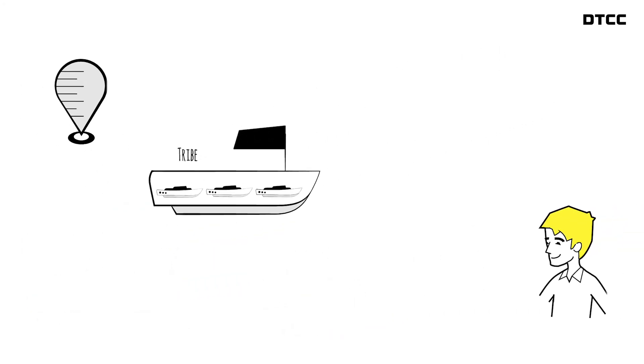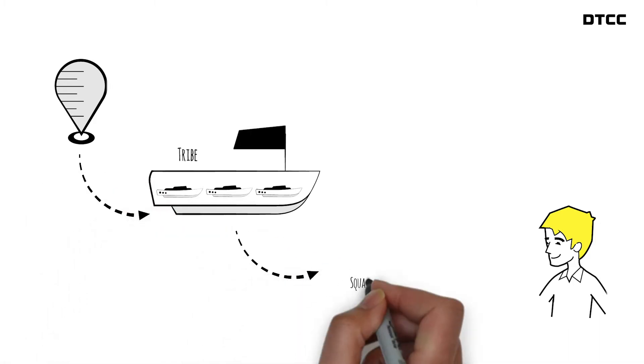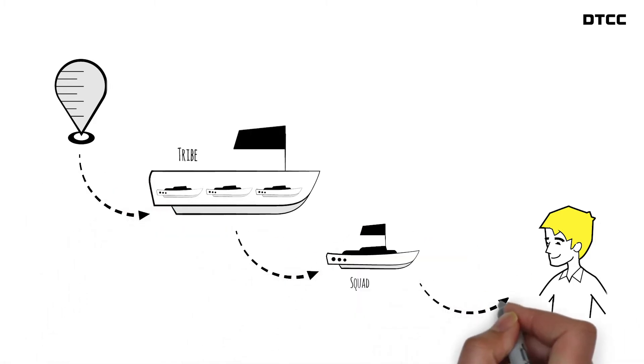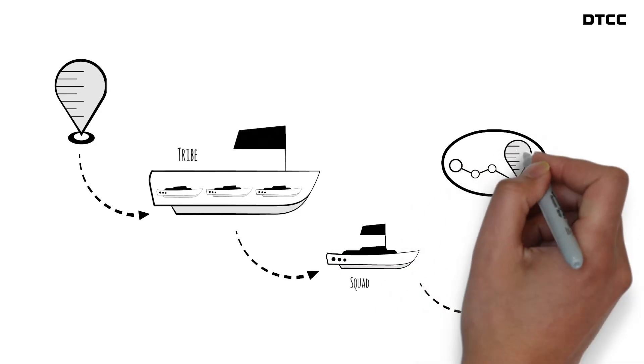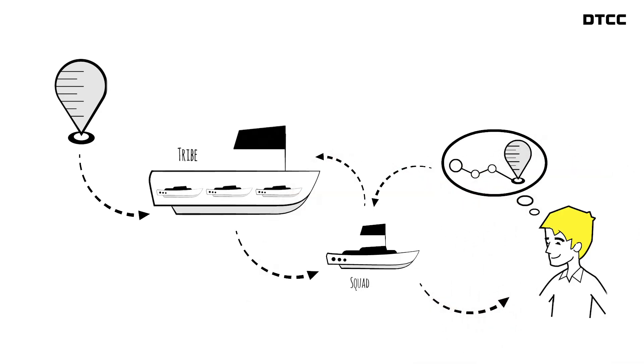If you're a member of a tribe, the cascade goes from corporate objectives to your tribe, down to your squad, and then you create individual OKRs that show how you're going to support your squad's OKRs.